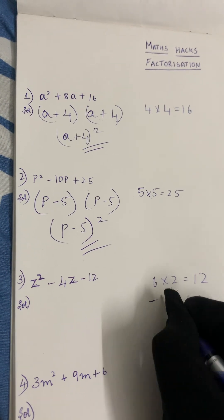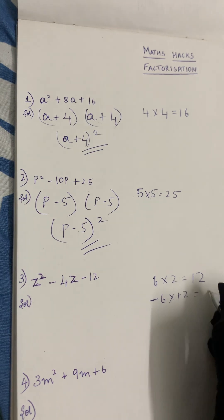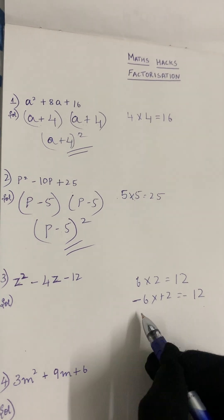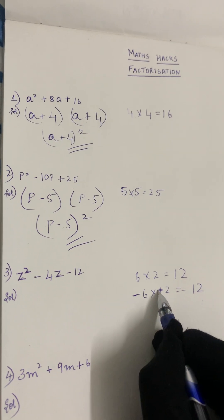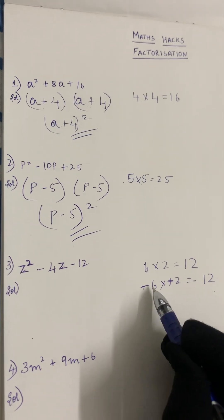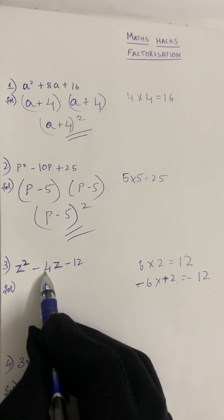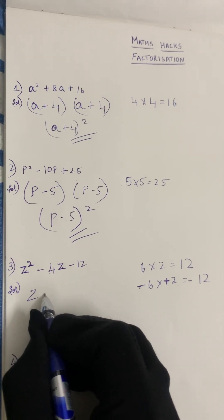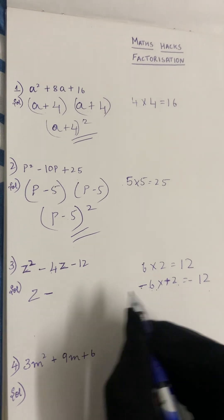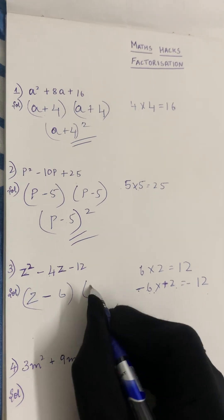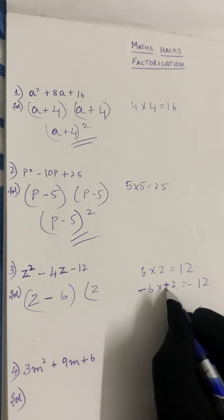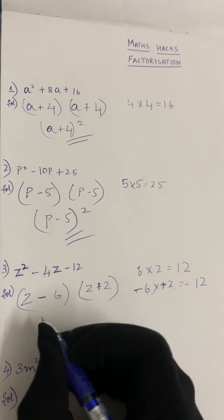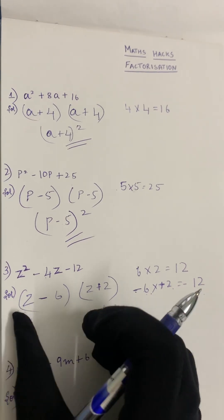We have to change the sign here. Let's take minus 6 and plus 2: minus 6 into plus 2 gives minus 12, which matches our third term. And if we subtract, 6 minus 2 gives us 4, which matches the middle term. So we take minus 6 and plus 2.